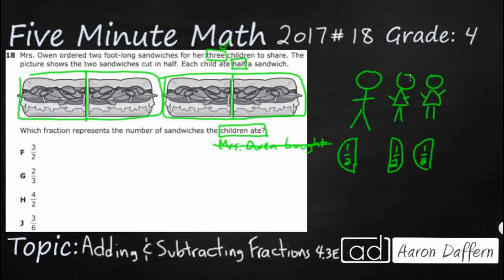We are looking for the number that represents the number of sandwiches the children ate, and we've got one half, one half, and one half. You can see visually, if I put two of those together, I get a whole. Those two together make a whole, which makes sense — the boy and the first girl eat that first sandwich, and then the second girl only gets half of that second sandwich eaten. So it looks like I've got one and a half sandwiches.